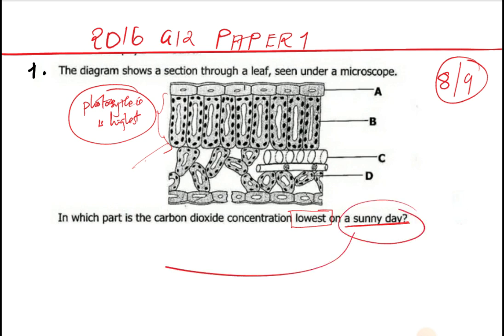Because during the sunny day there's a higher rate of photosynthesis causing a lower concentration of carbon dioxide. Because carbon dioxide in this region is being used more, you are not going to find a lot of carbon dioxide in the palisade cells. That's what they're trying to mean during the sunny day.